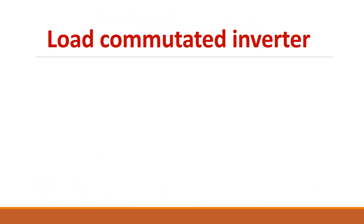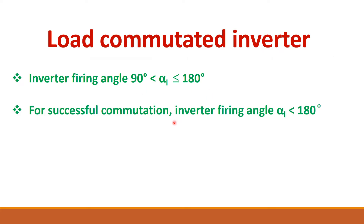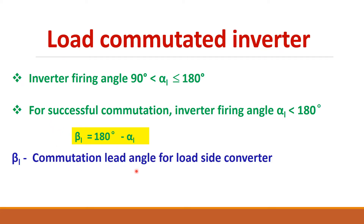In the load commutated inverter, there is a limitation on the firing angle. Normally the firing angle for the load side converter should be between alpha equal to 90 to 180 degrees. But to avoid commutation failure, alpha must always be less than 180 degrees. This is expressed as beta equals 180 minus alpha, where beta is called the commutation lead angle for the load side converter. Beta can be a small value, but alpha must remain less than 180 degrees.